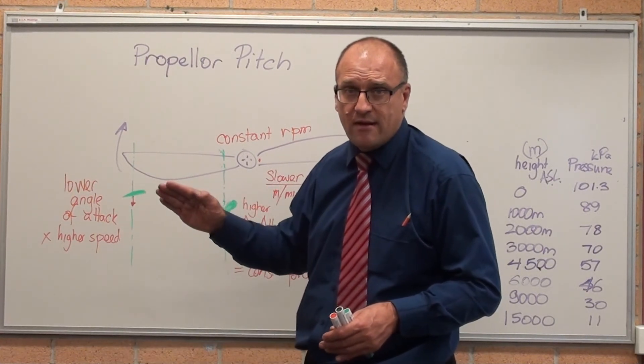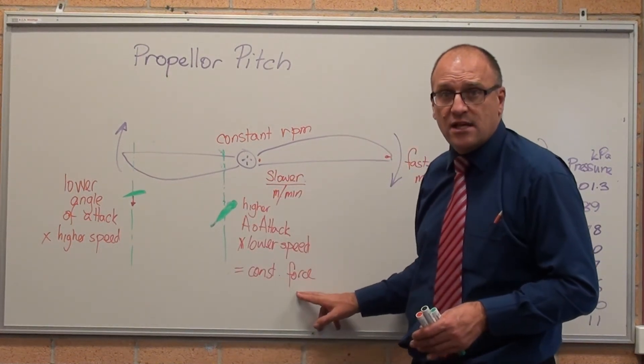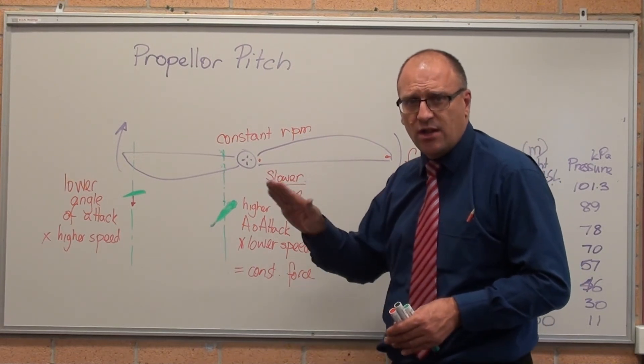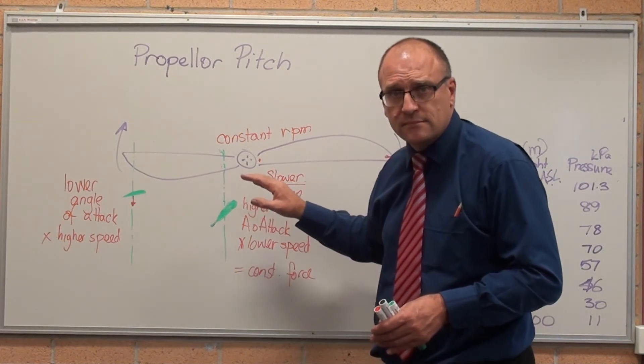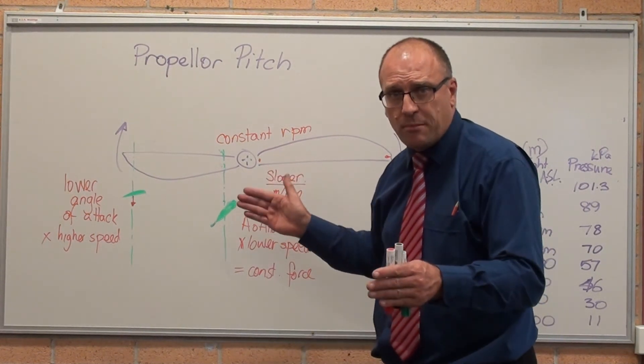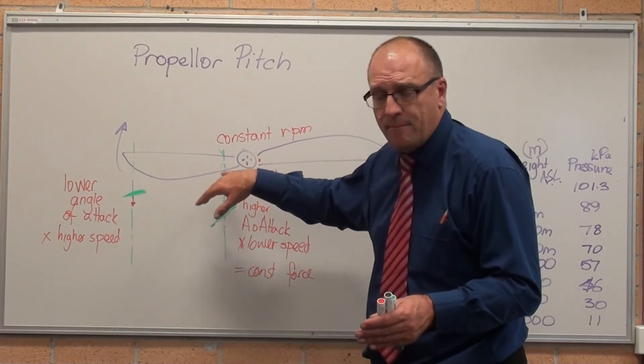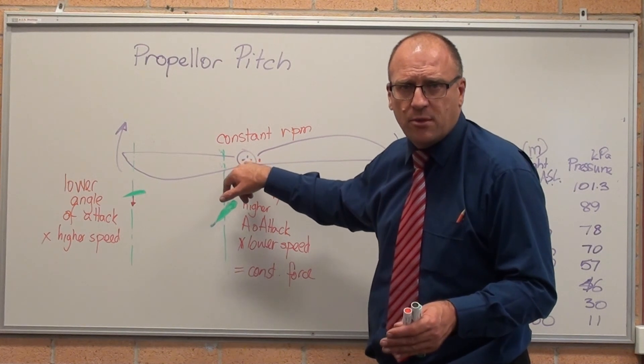Higher speed times the lower angle of attack gives the same thrust as the middle at a high angle of attack. So they designed the propeller so it's constant thrust over the length of the propeller blade to try and minimise the amount of the moment that's trying to snap the propeller blade off the boss here.